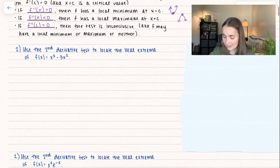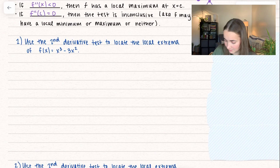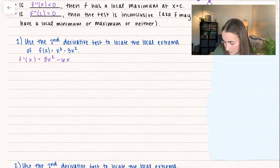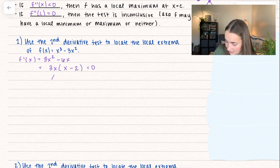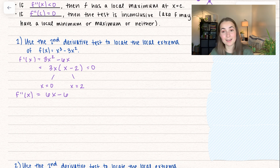Let's use the second derivative test to locate the local extrema of f of x equals x cubed minus 3x squared. Our first step is to find the first derivative, then simplify. I can factor out a 3x, leaving 3x times the quantity x minus 2. Setting that equal to 0 gives us two critical values: x equals 0 and x equals 2. Now we find the second derivative, which is 6x minus 6.